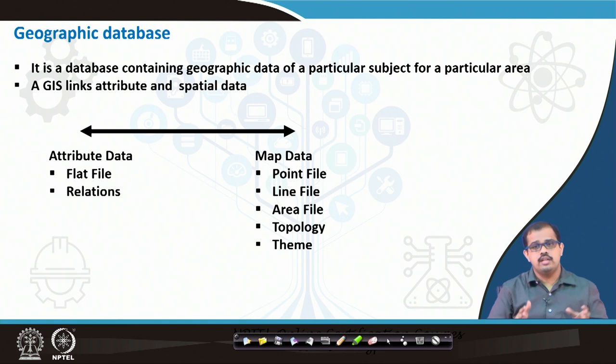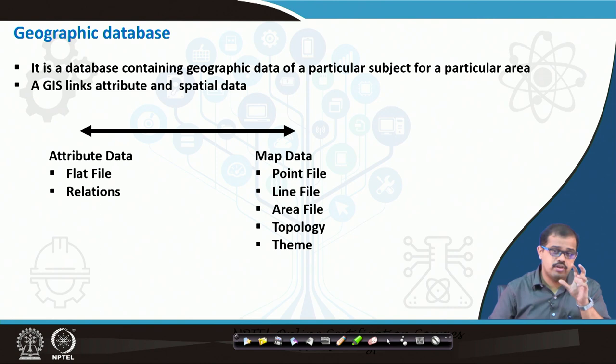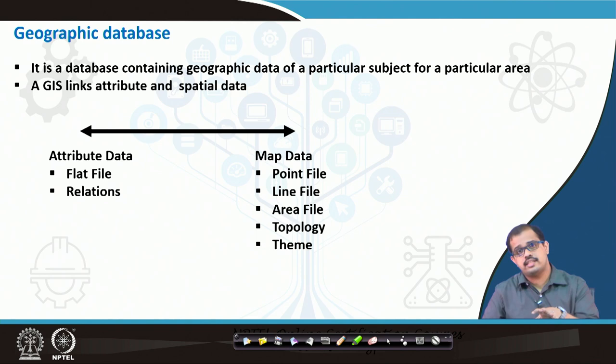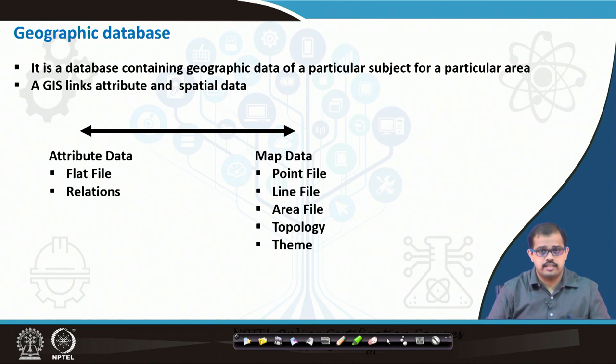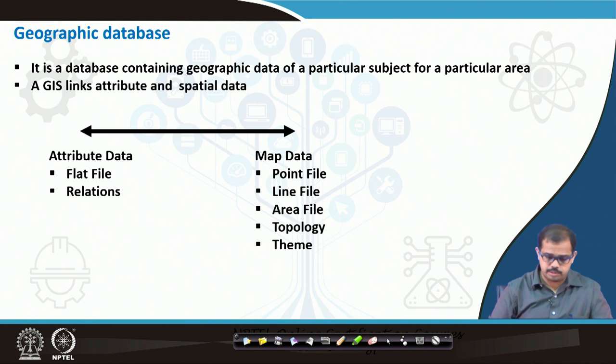Attribute data are normally flat files or files with numbers, quantitative or qualitative data, which can be related through relations such as equal to, greater than, or less than. Map data in spatial form has points, lines, polygons, built-in topology, and thematic information. Combining both attribute and spatial data in a database is nothing but a geographic database or GIS database. In the practical class we will create a vector layer, manipulate it, store it as a database, and use attribute data to quantify things like area.